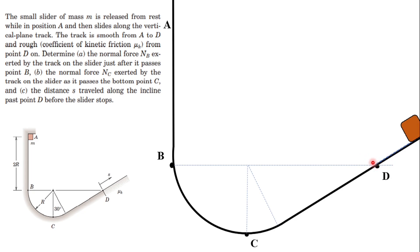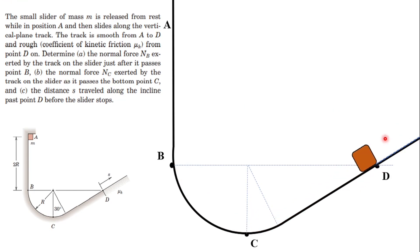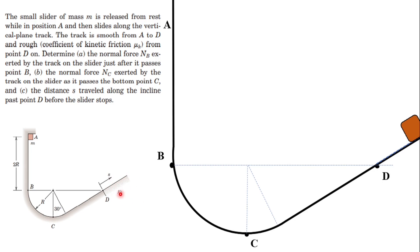Looking at the animation, the particle starts its journey from A, then passes through point B, then point C, then point D. Since there is kinetic friction after point D, the particle will eventually stop. We can apply the work-energy principle for solving this problem. For the frictional force cases, the coefficient is taken as μs, but since this is a kinetic friction scenario, we substitute μs with μk.